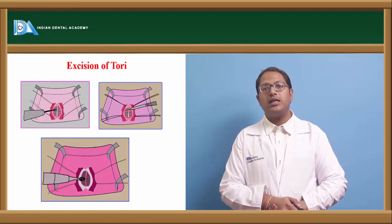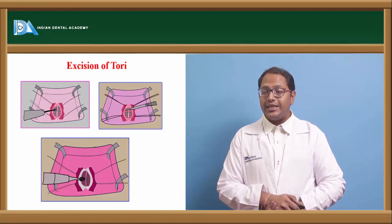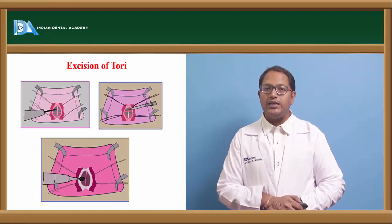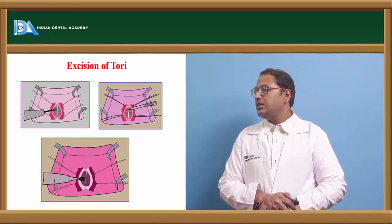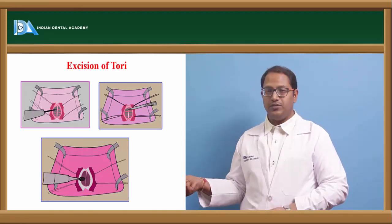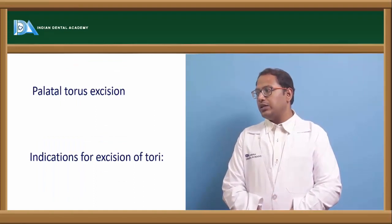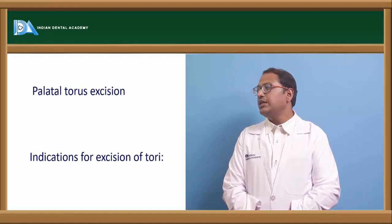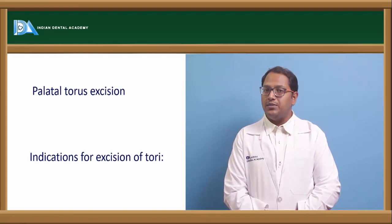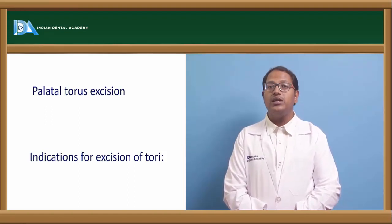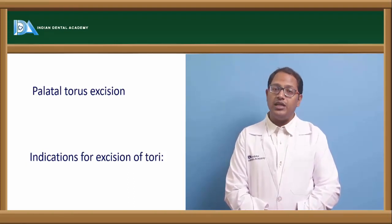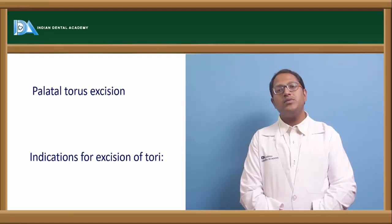Excision of tori — tori are classified as large, moderate, or small. If there is a small torus, we can simply relieve the denture in that area and proceed. But if the torus is covering the entire palate, we need to excise it — we send the patient to the oral surgeon, get it relieved, and then proceed with denture making. The indications for excision of palatal tori are when the torus is large enough to hinder denture base stabilization, since maximum support comes from the hard palate — the primary stress-bearing area. Relieving the torus would break the atmospheric pressure seal created between the hard palate and the denture.